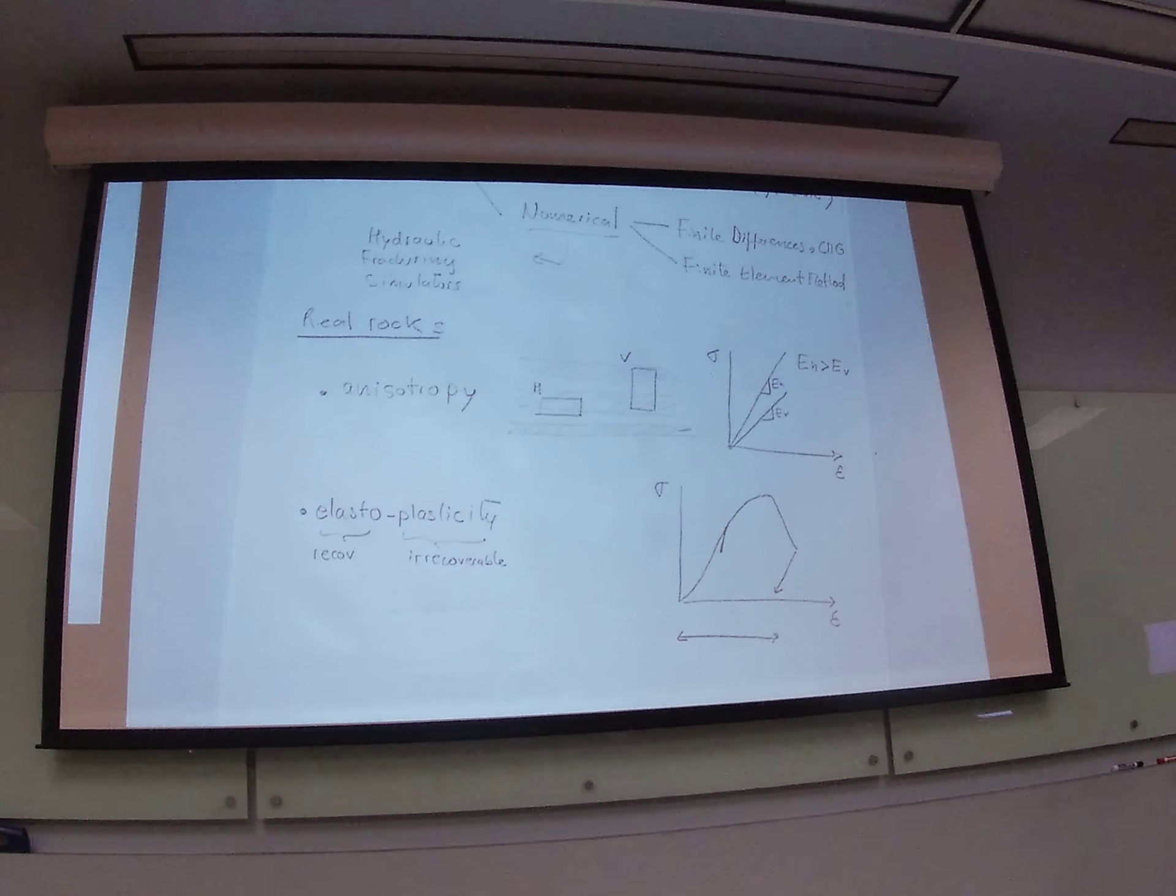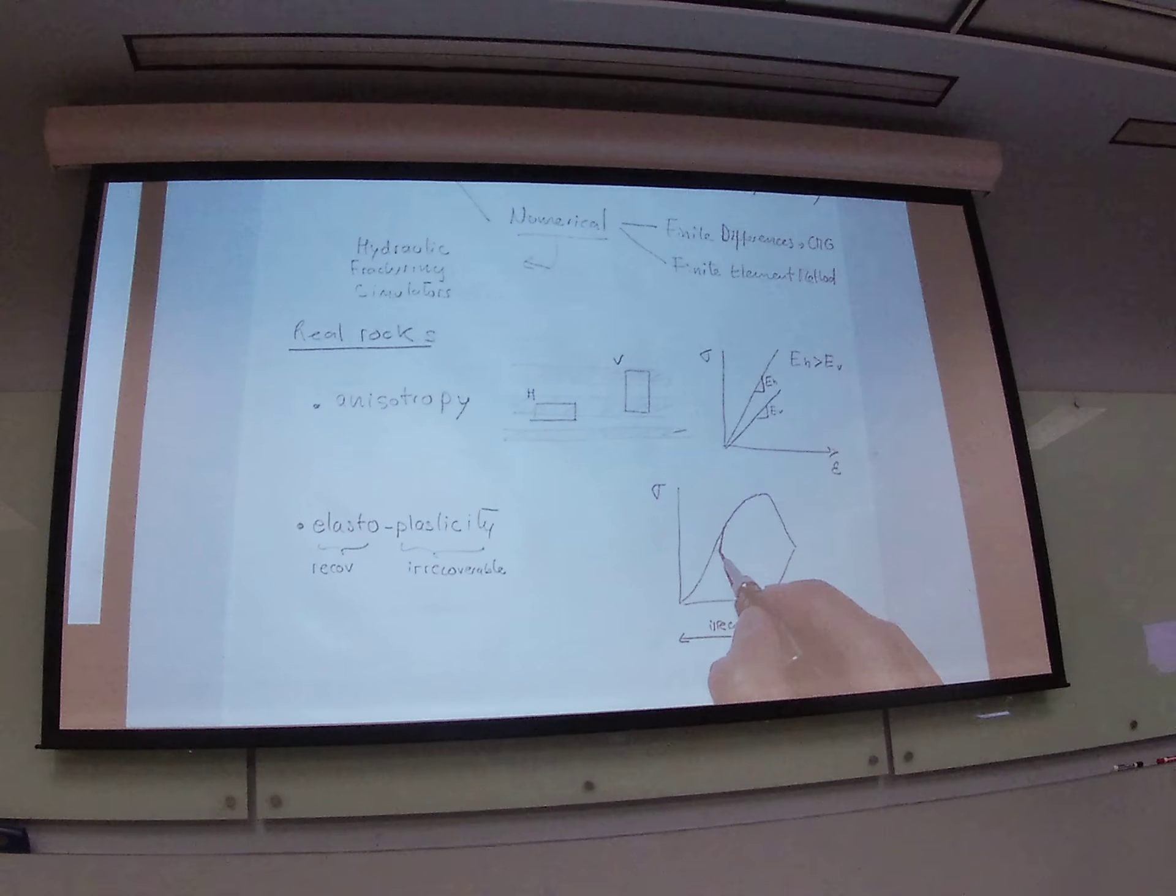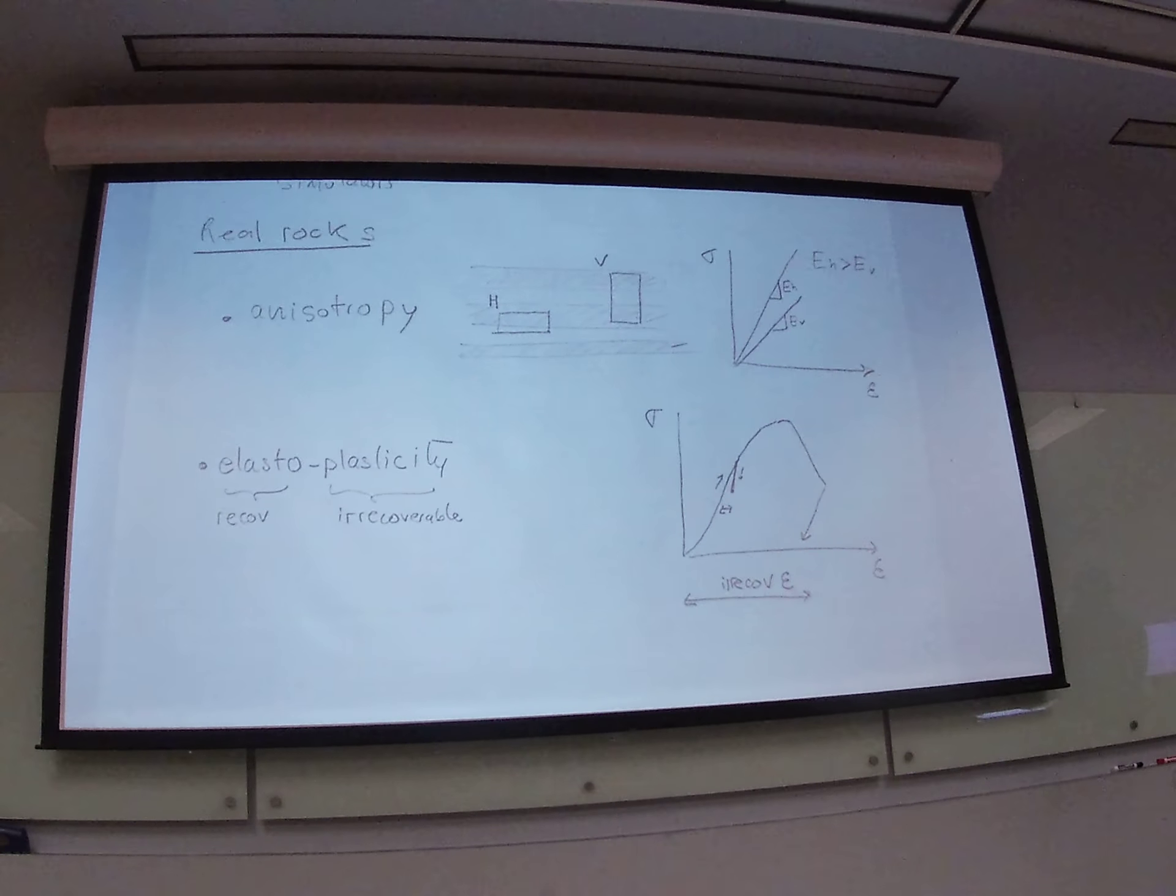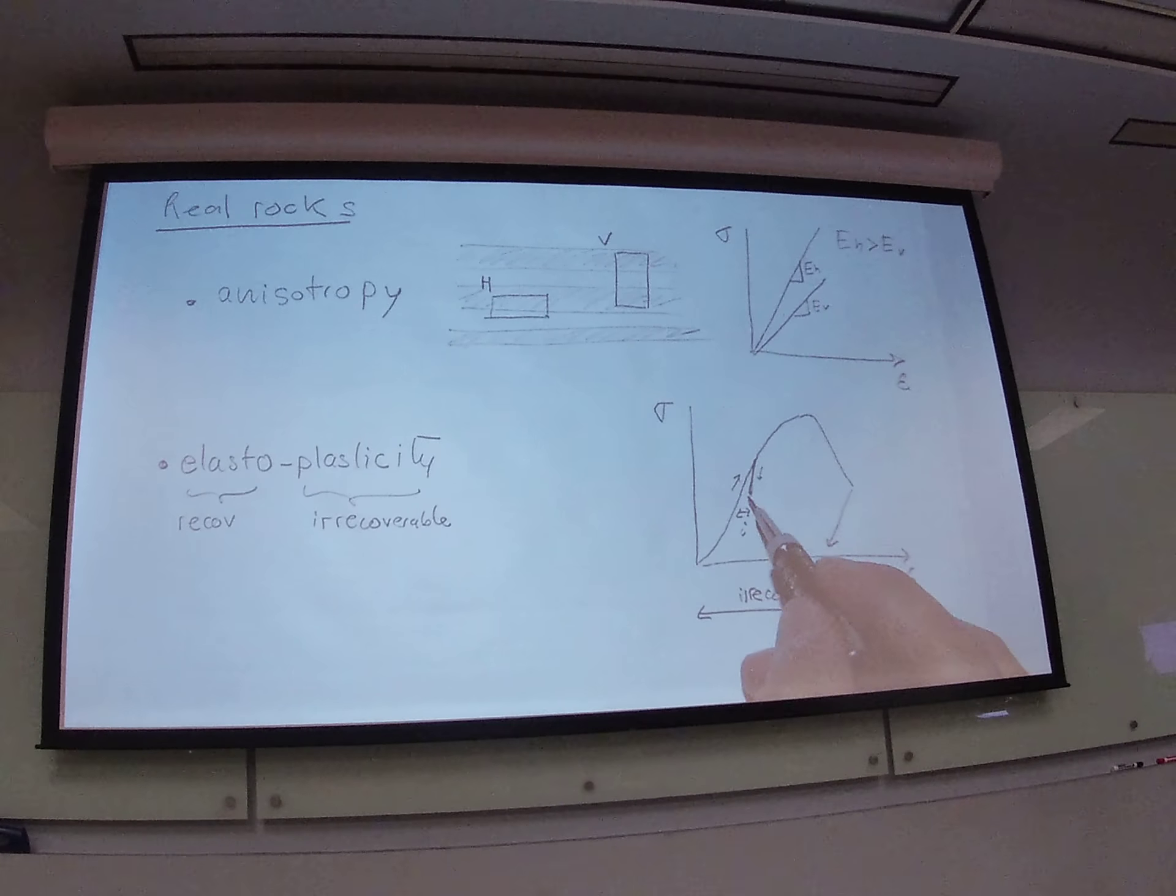All of this is irrecoverable strain. Even this small unloading also it doesn't go to the same path. Already here you are having plastic strains because you do not come back to this point otherwise you will be elastic. You come back to that point. You never recover that strain. That one is also irrecoverable strain.